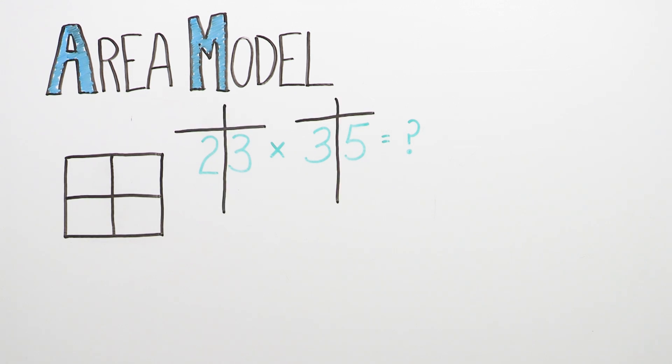To start, your child will use her knowledge of place value to decompose into tens and ones. To decompose means to break apart. Let's decompose these numbers by the value of each digit.